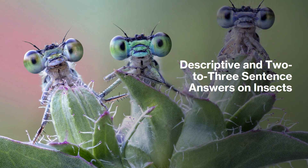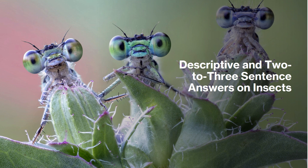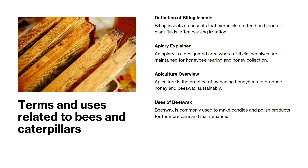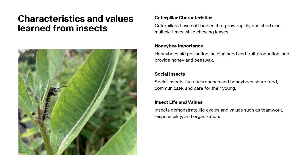Now let's look at descriptive answers about terms and uses related to bees and caterpillars, as well as the values we learn from insects. Biting insects pierce skin to feed on blood or plant fluids. An apiary is where beehives are kept for honey collection. Apiculture is the practice of rearing honeybees. Beeswax, produced by bees, is used to make candles and polish for furniture. Caterpillars have soft bodies, grow rapidly, chew leaves, and shed their skin multiple times. Honeybees help pollinate flowers and provide honey and beeswax. Social insects like honeybees and cockroaches share food and care for their young. From insects, we learn values such as teamwork, responsibility, and organization.